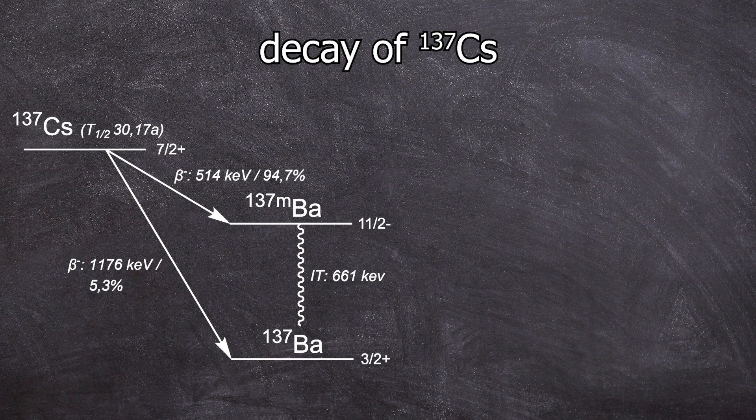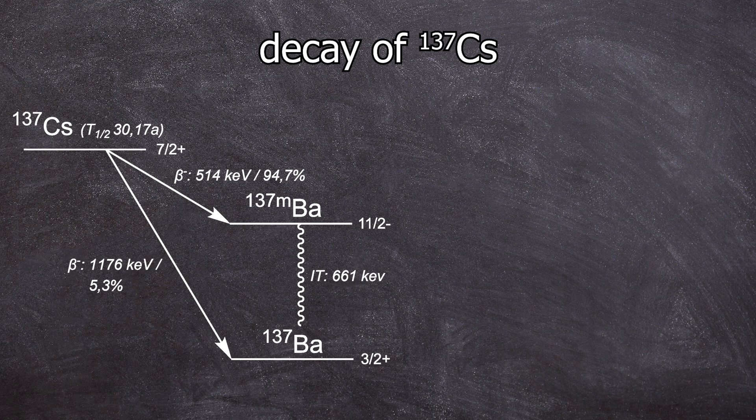Additional information for those who are curious. First, an important note. Strictly speaking, the 661 kiloelectron volt line we measure with the Geiger-Müller counter does not come from cesium-137, but it comes from the barium-137M.